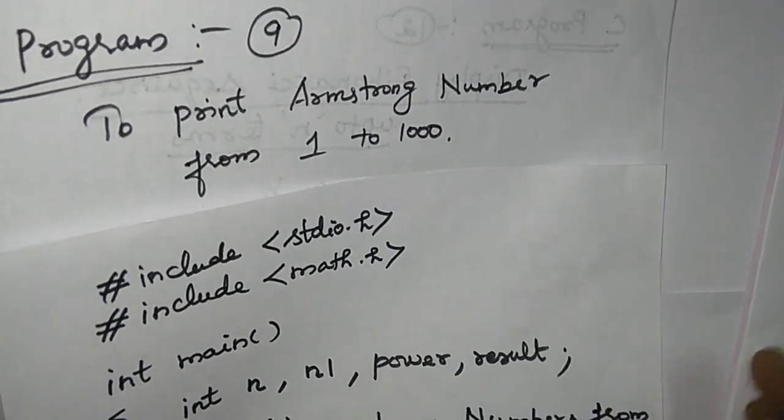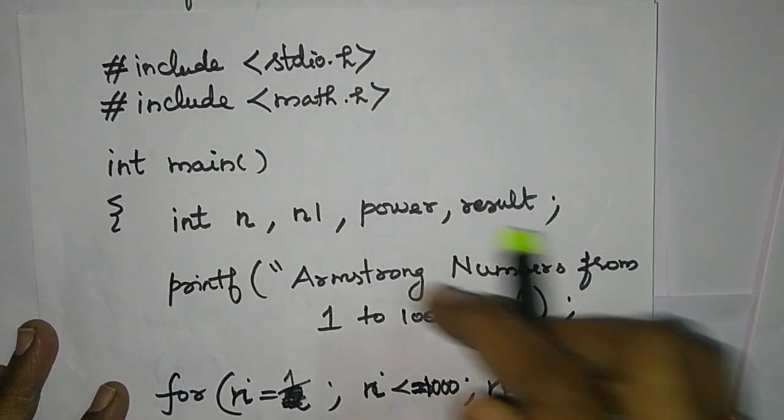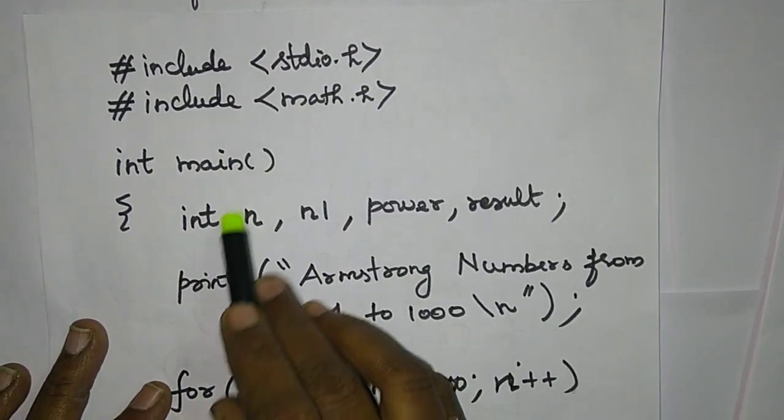We will use a for loop to include. We will now show how to include the coding. First step, we will include the header file. This is int main function, declaration.